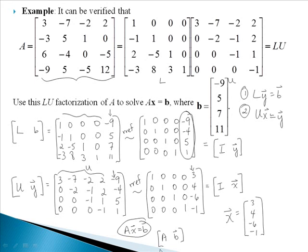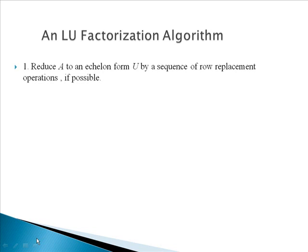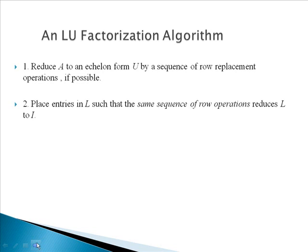The next question you should ask yourself is, what do I do if I don't have the LU factorization? How do I find it? We have an algorithm for finding the LU factorization of our matrix A. First, reduce A to an echelon form U by a sequence of row replacement operations if possible, and remember we're not doing row interchanges. Then number two, place entries in L such that the same sequence of row operations reduces L to the identity. We're going to look at some examples of this algorithm to make it a little clearer.